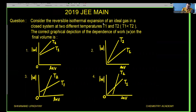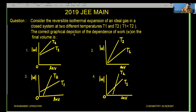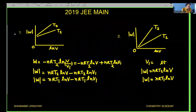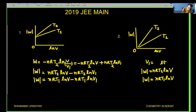Now let us go through the question. Consider the reversible isothermal expansion of an ideal gas in a closed system at two different temperatures T1 and T2, where T2 is greater than T1. The correct graphical depiction of the dependence of work on the final volume is asked. The magnitude of work done versus ln(V) graph is drawn at two different temperatures T1 and T2. Let us discuss all four options one by one.